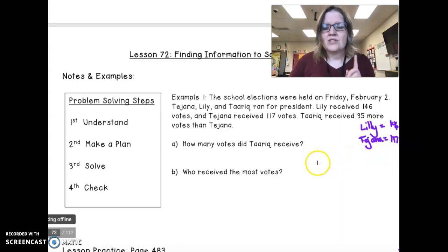And Tarek is 35 more votes. Which, if I were to look at that, I could make a little equation. Tarek equals Tejana's votes, which is 117 plus 35 more. And that gives me, when I add these up, I get 152 votes for Tarek.